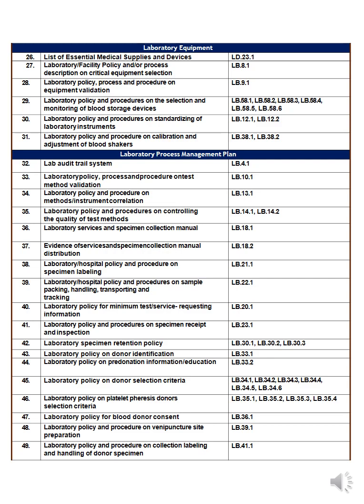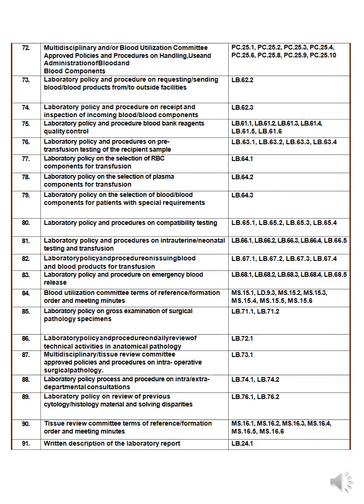Items forty-three and above are related to the blood bank and will be covered in a separate presentation. Moving to number ninety-one for the general lab: written description of the lab report. Tell me how to describe your report — what items are inside it. Show me a sample report. Your report should be standardized across the hospital, including results, reference numbers, and who signs it.